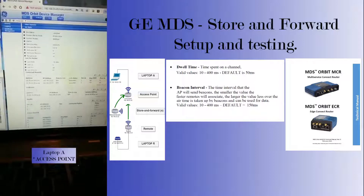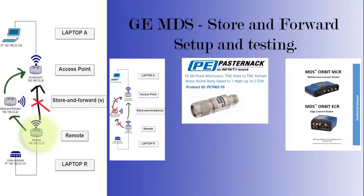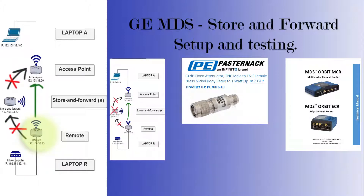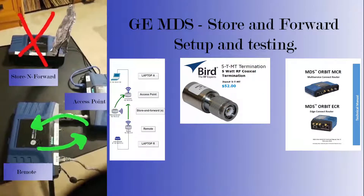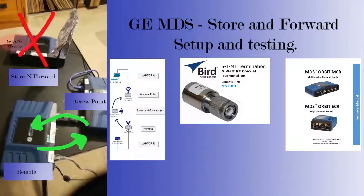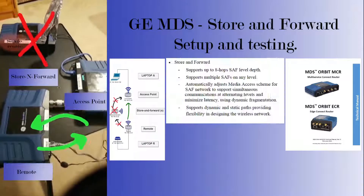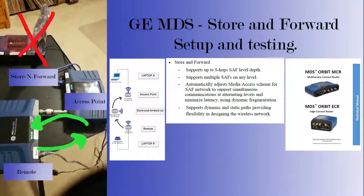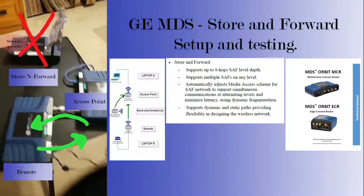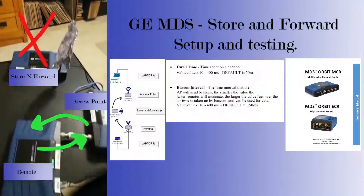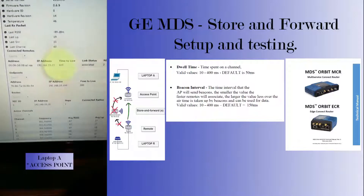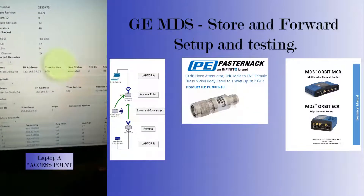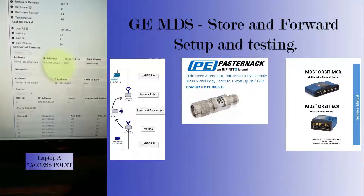Our remote that was talking through the store-and-forward is now talking directly to the access point, and we did nothing more than remove it from the picture. You may have noticed on the GUI that the store-and-forward — the .22 — was still listed. That was probably a stale entry in the sense that it wasn't actually active but was still in the table. Now we're going to turn it back on, and you can see that stale table entry did update and it's no longer listed. Our remote is still showing connected as one hop.